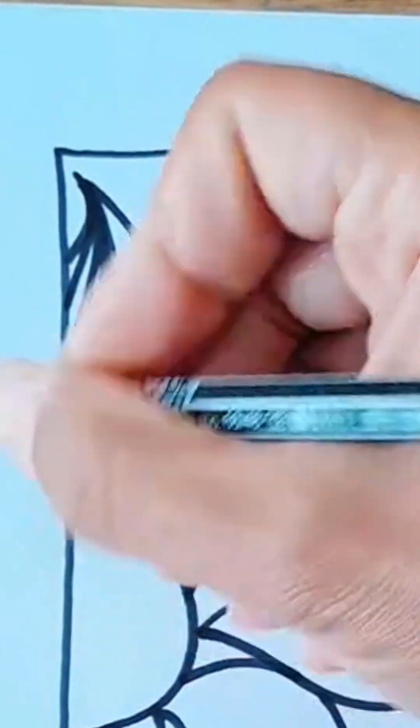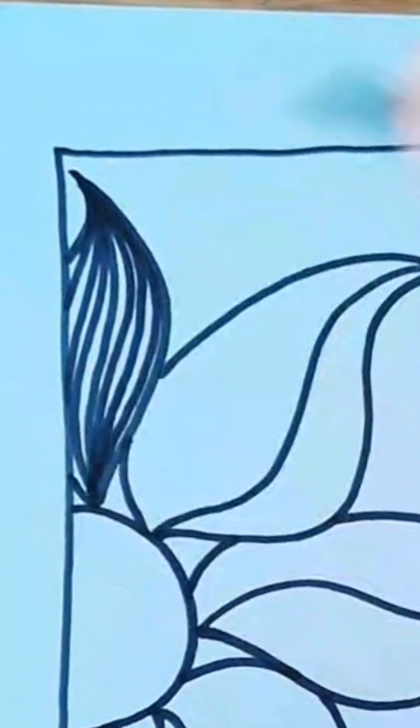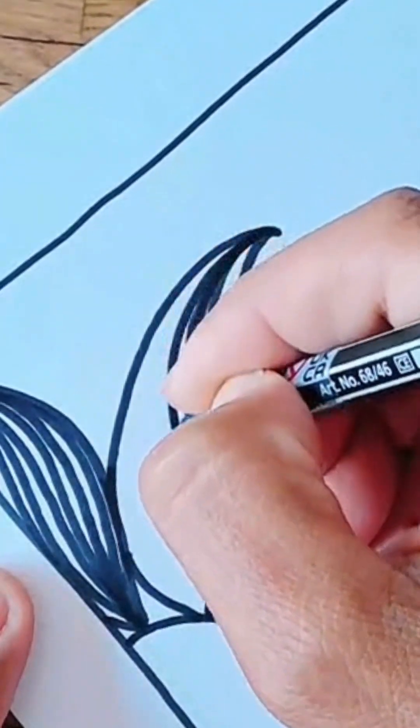Have a look at how I've done that there. What you're doing is basically just drawing a line from the top to the bottom, from the top to the bottom, and leaving a slight little gap in between as you can see.